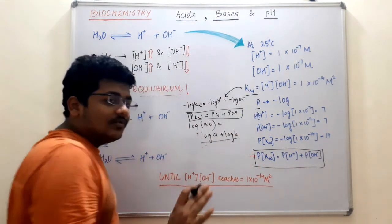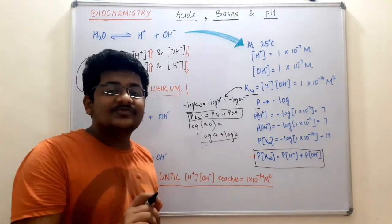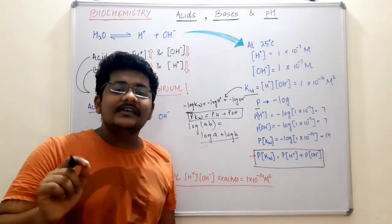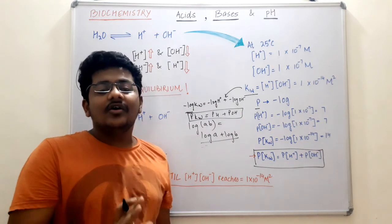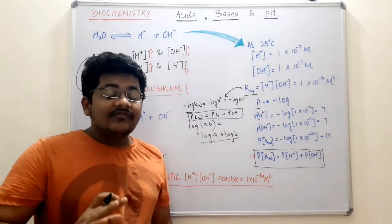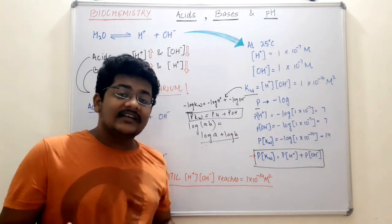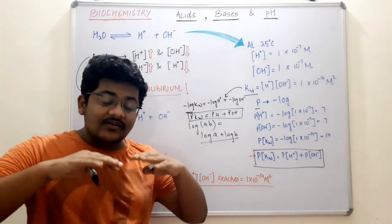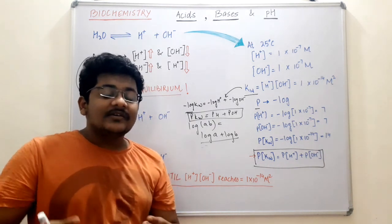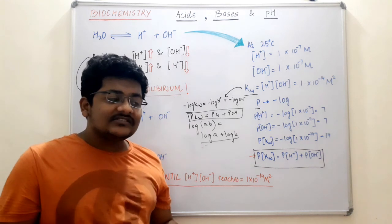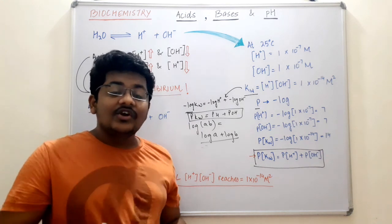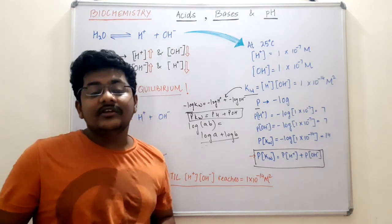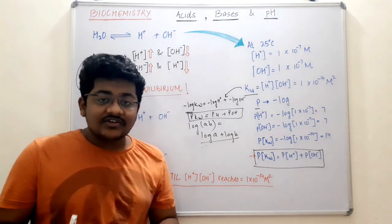Apart from this, you also need to know the term P — P means the negative log of something. So pKa means the negative log of the value of Ka. We are going to discuss how amino acids are affected by the pH of their environment. Suppose you mix amino acids in an aqueous solution with a very low pH — we will discuss how the structure of the amino acid changes.